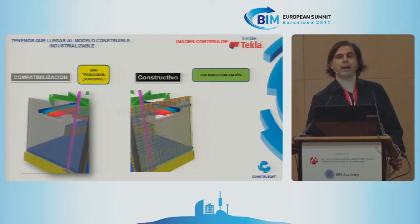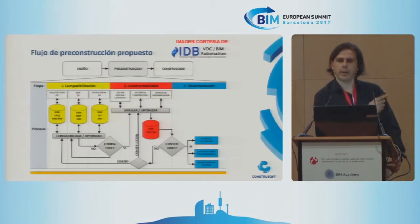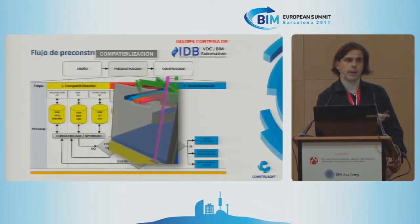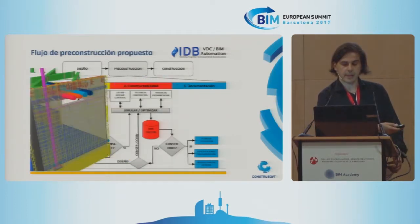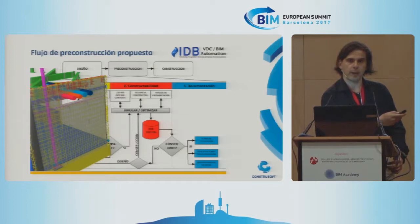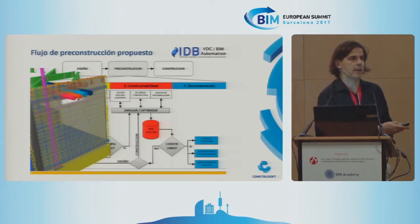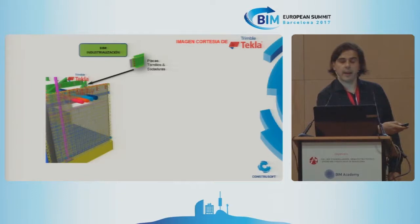I would like to have the BIM approach not only for information but also for industrialization. That's the workflow. When we talk about Level 300, we are doing traditional BIM. What we need to achieve is a stage where the subcontractor works at a very detailed level, allowing us to bring the fabricated piece with a barcode so that we can just put it in the right place — and we will be much more productive.